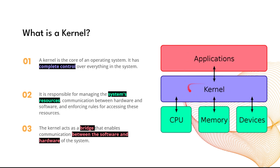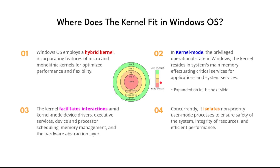Where does the kernel fit into the Windows operating system? Since Windows NT — basically Windows XP all the way up to Windows 11 — Windows has utilized a hybrid kernel structure. A hybrid kernel combines a monolithic kernel with a micro kernel. A monolithic kernel, like in TempleOS or Linux, means the entire OS exists in kernel space, which enables fast communication times between system hardware.